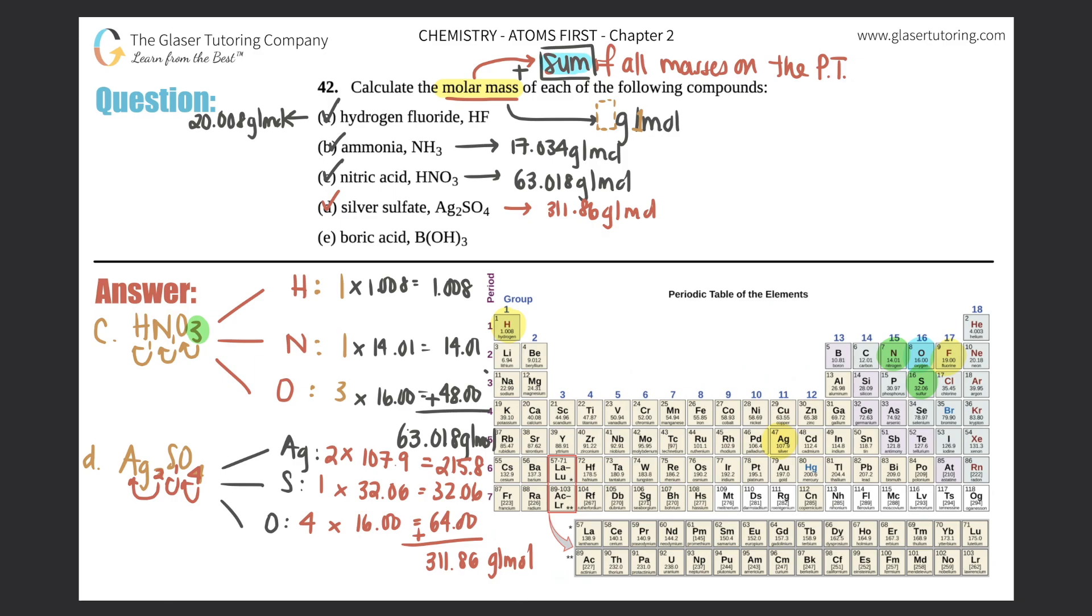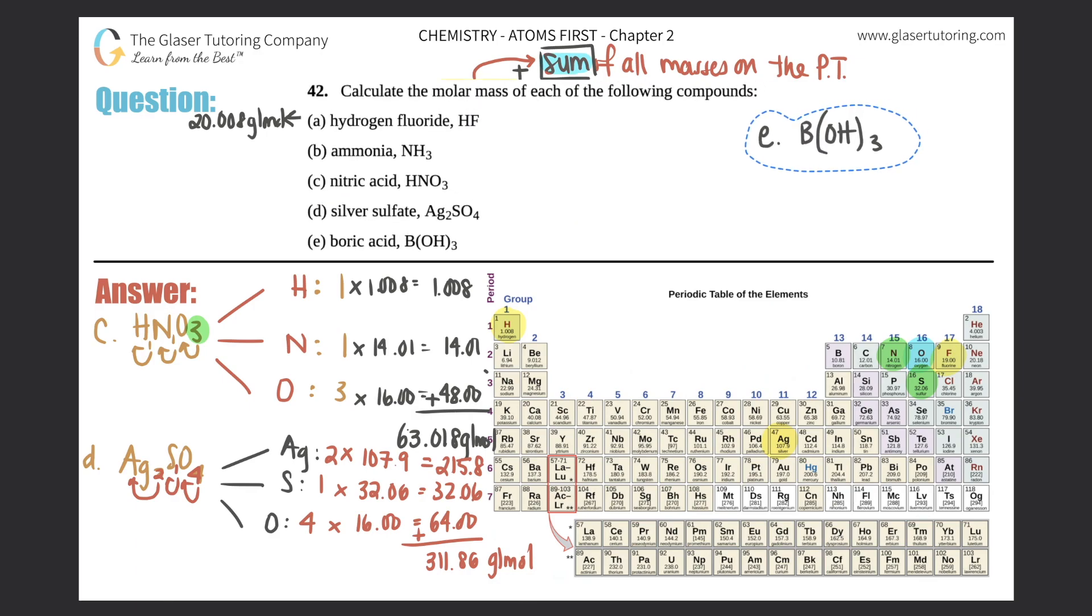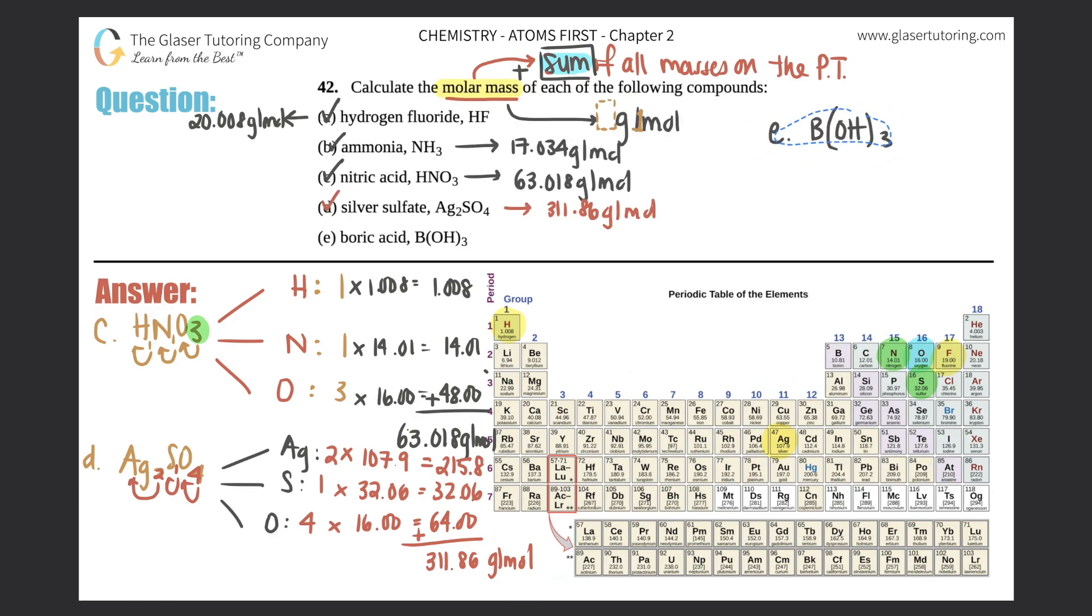Last one - boric acid. I think I could put it over here. Boric acid is B(OH)3. How many individual elements do we have here? There's three of them, right? We have B, O, and H. How many borons are there? The B is here - there's one here. This three does not count for boron, so there's one boron.